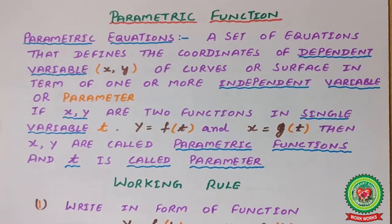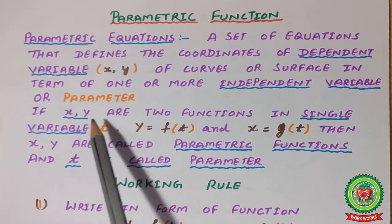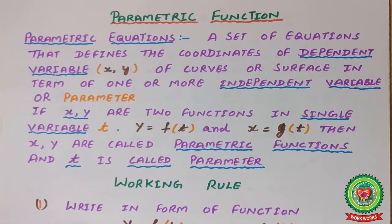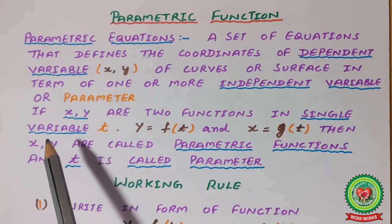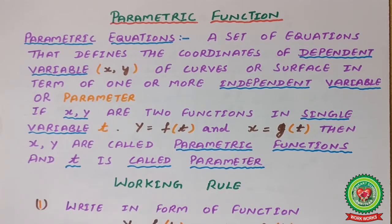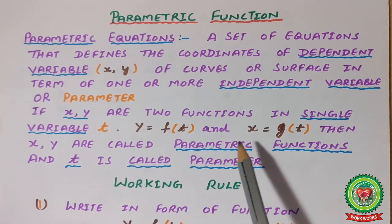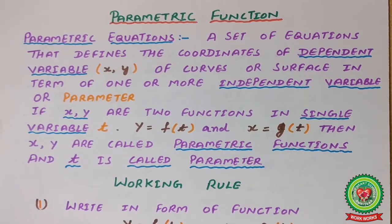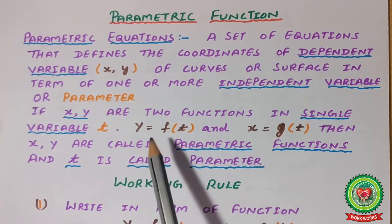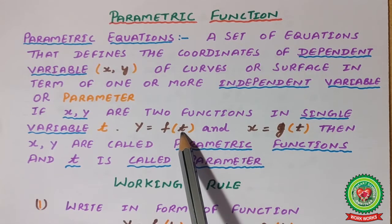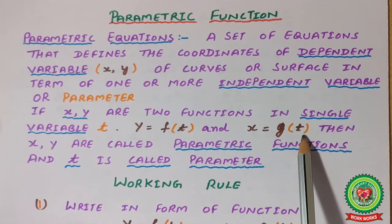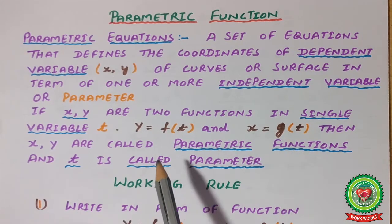Now in the case of parametric functions: if x and y are two functions in a single variable t, we write y = f(t) and x = g(t). Then x and y are called parametric functions because both share the same variable t, and t is called the parameter.